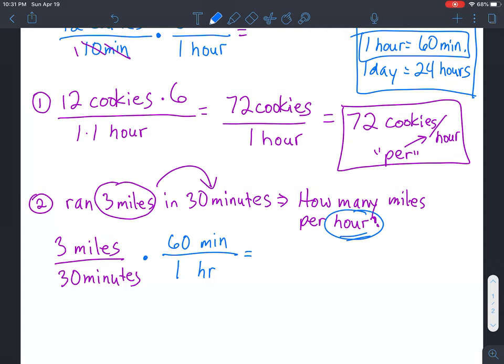So using dimensional analysis, it's just a really good way to know whether you multiply or divide certain units. 30 and 60 reduce to 1 and 2. Minutes and minutes reduce. So we end up with 3 times 2 on top, which is 6 miles. On the bottom, we end up with 1 hour. Once again, you probably would just want to write 6 miles slash hour, which is 6 miles per hour.